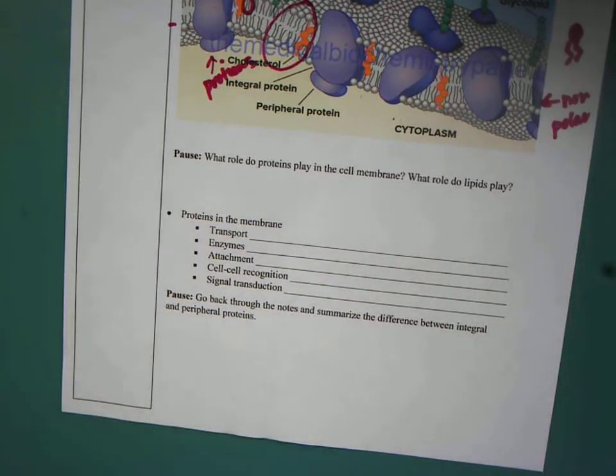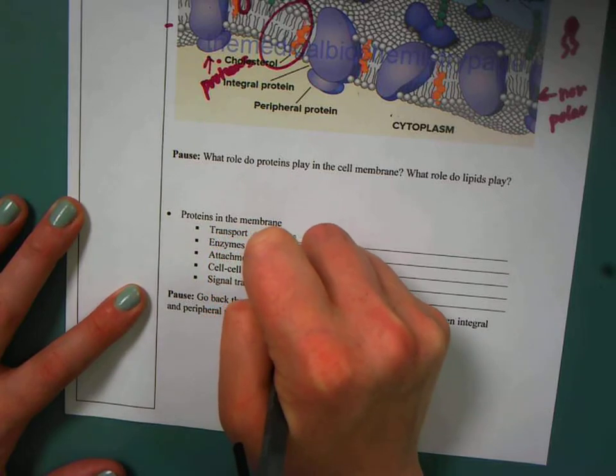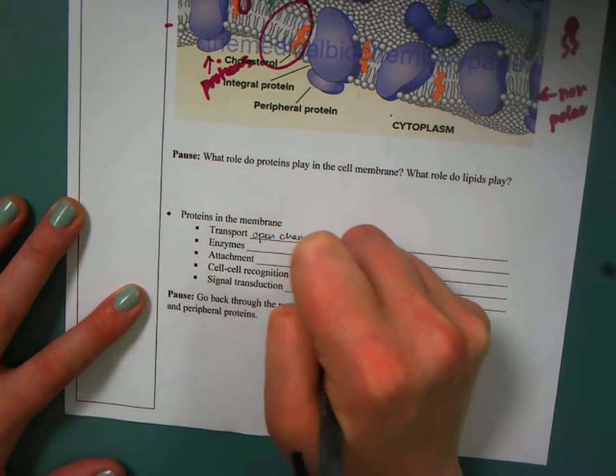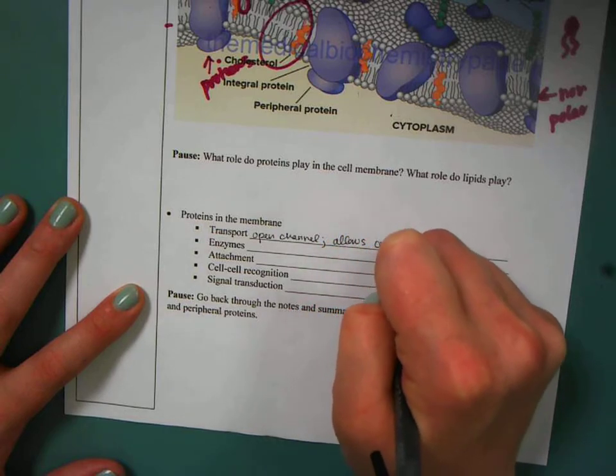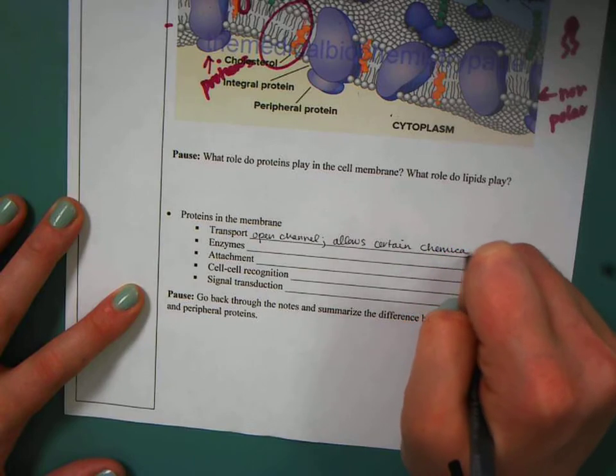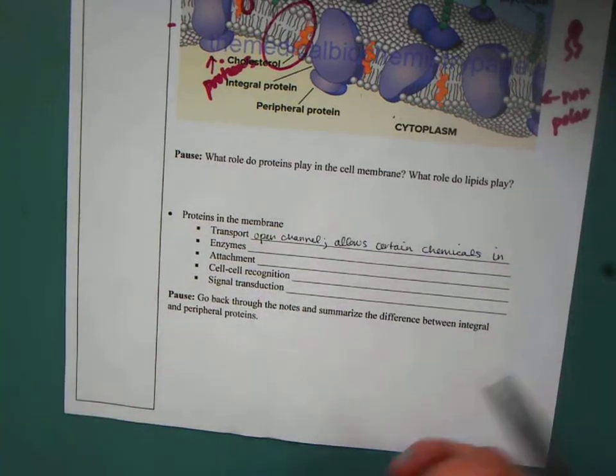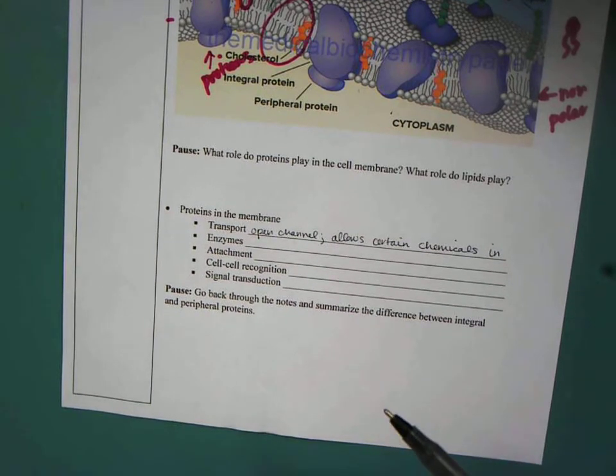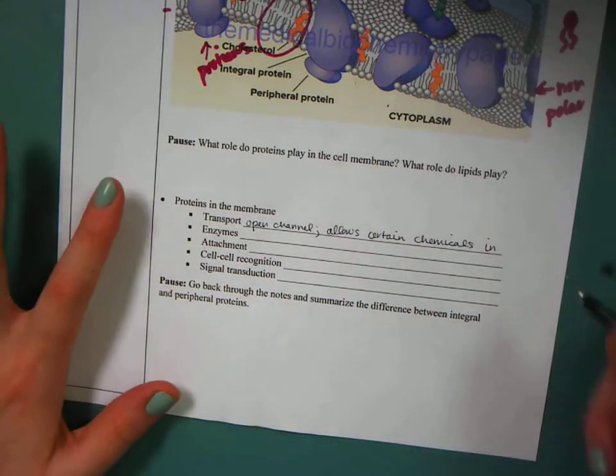Probably the simplest type of protein is just a transport protein. So it has an open channel, and it allows certain things in, chemicals in. So they have a very specific channel, and they'll just let certain chemicals or certain products inside or out.